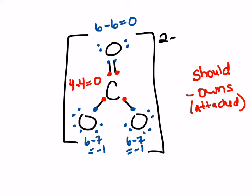Looking at the total charge on the structure, there's a minus two charge overall. When I add up all the formal charges, they should add up to minus two — and they do: zero plus zero plus negative one plus negative one gives negative two. Also, negative formal charges should be on more electronegative atoms. Oxygen is more electronegative than carbon, so having negative one charges on those oxygens is appropriate.